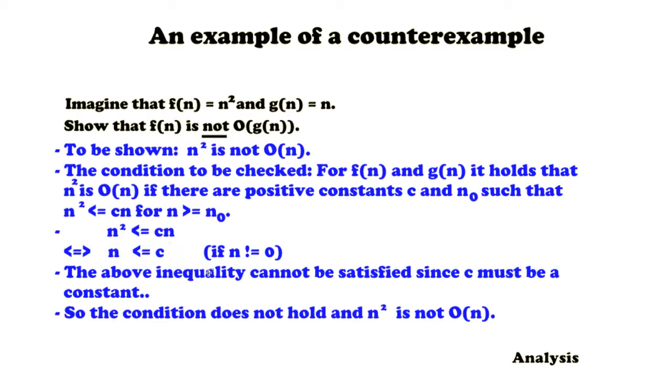The above inequality cannot be satisfied since c must be a constant. So the condition does not hold because this part does not hold. So because the condition does not hold, n squared is not O(n). And this is what we had to show.